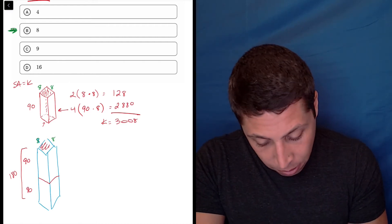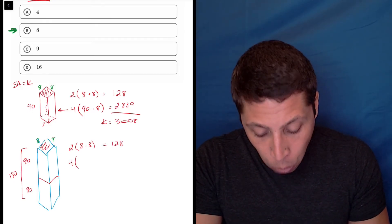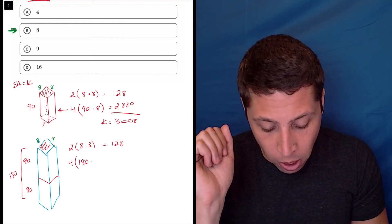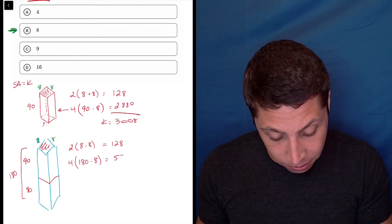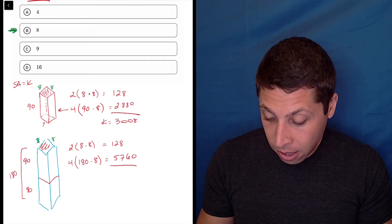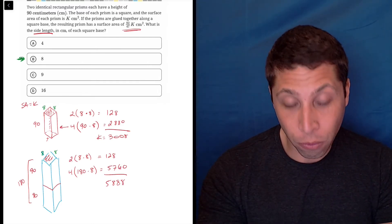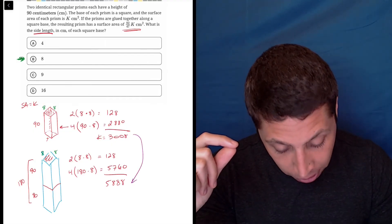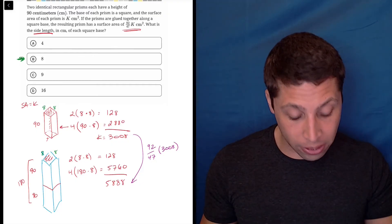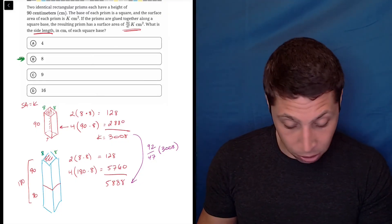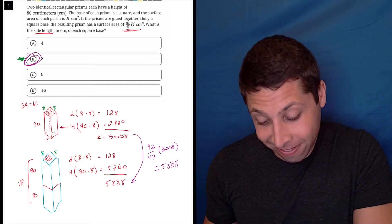But look at our math, right? It's still going to mostly be the same. This, we're still going to have a top and a bottom that are an eight by eight. So that's still 128. Now we're going to have four long skinny sides, but instead of 90, they're going to be 180 times eight. So now I need the calculator. 180 times eight is 1,440. Times four is 5,760. Add that to the 128. We get 5,888. So now we have to compare these, right? That's not K. That's the value of 92/47ths of K. So basically in order to get from here to here, I'm going to multiply what I have by 92 over 47. So hopefully 92 over 47 times 3,008 is 5,888. So let's see. 92 times 3,008 divided by 47 is 5,888. That's my answer.